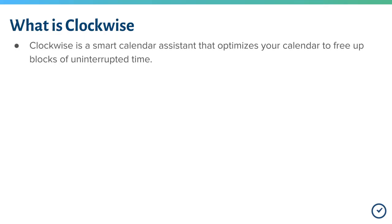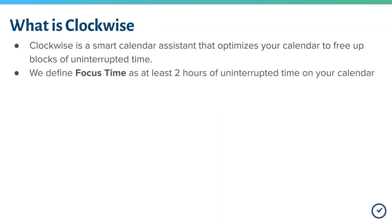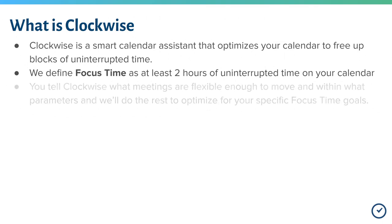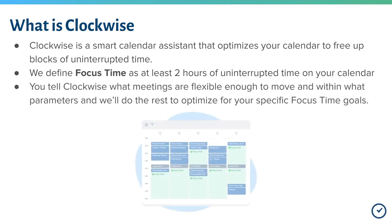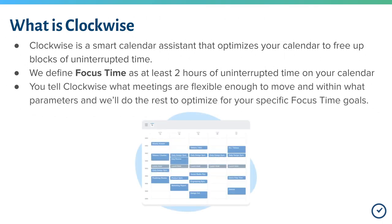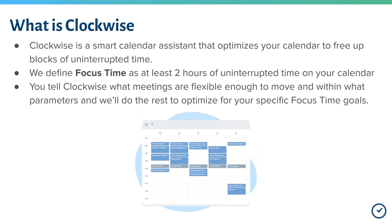Clockwise is a smart calendar assistant that optimizes your calendar to free up blocks of uninterrupted time. We define focus time as at least two hours of uninterrupted time on your calendar. You tell Clockwise what meetings are flexible enough to move and within what parameters, and we'll do the rest to optimize for your specific focus time goals.